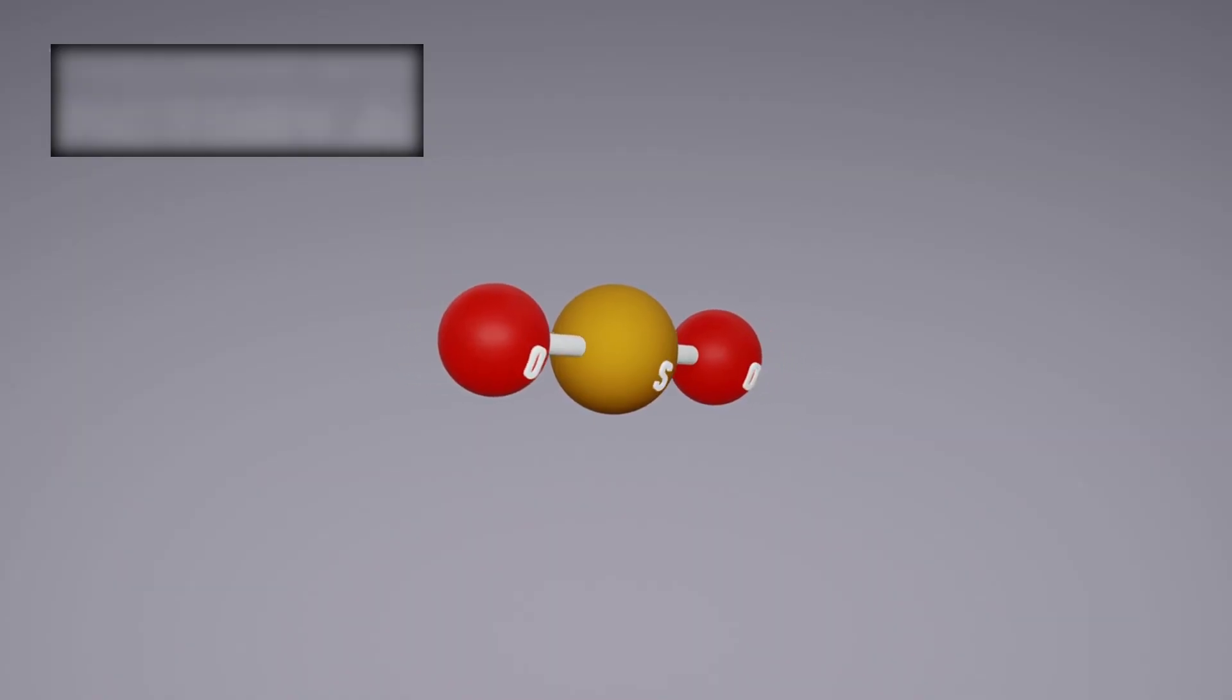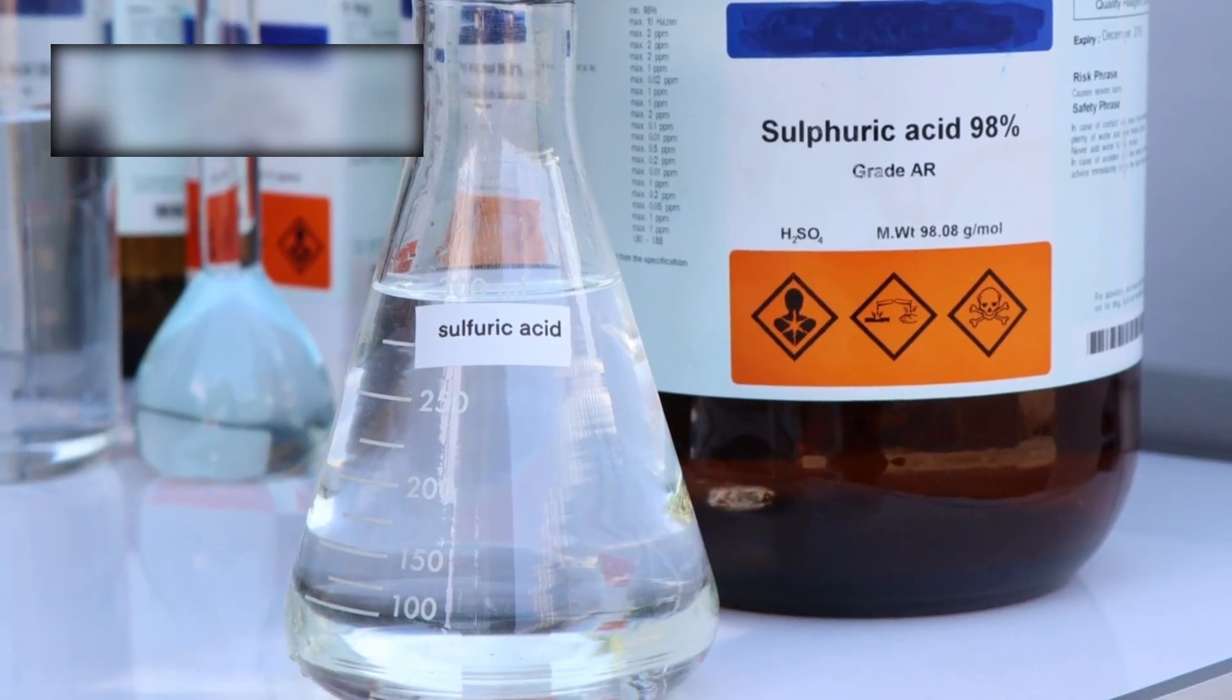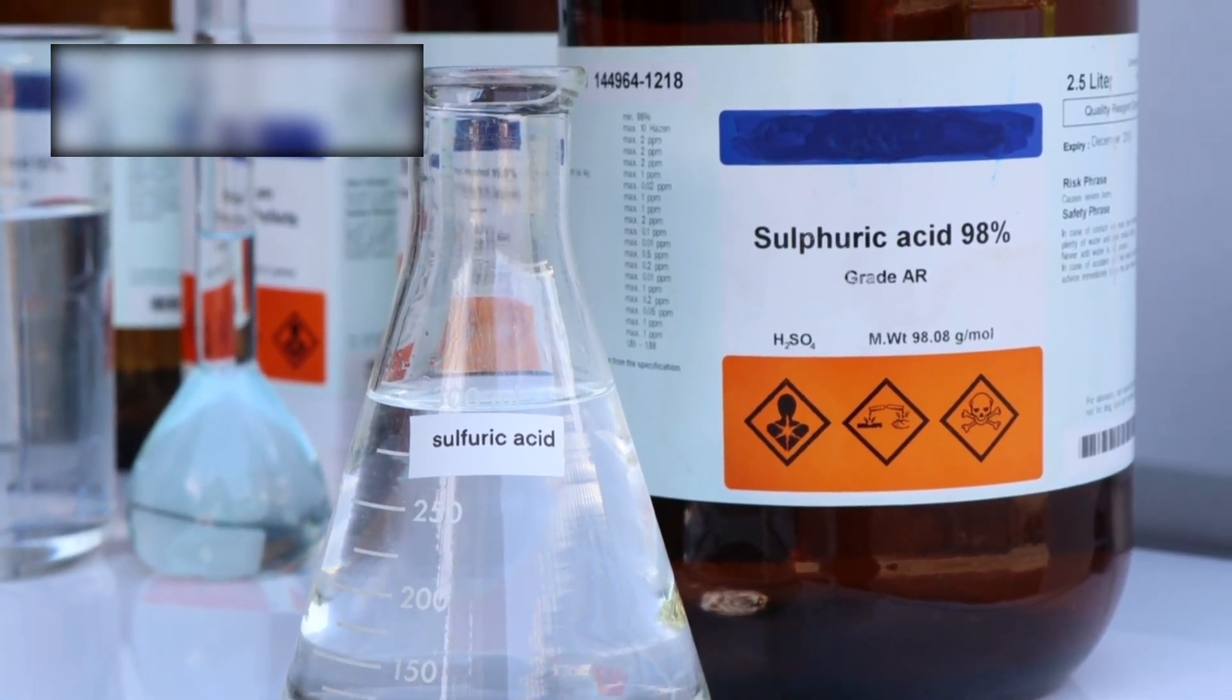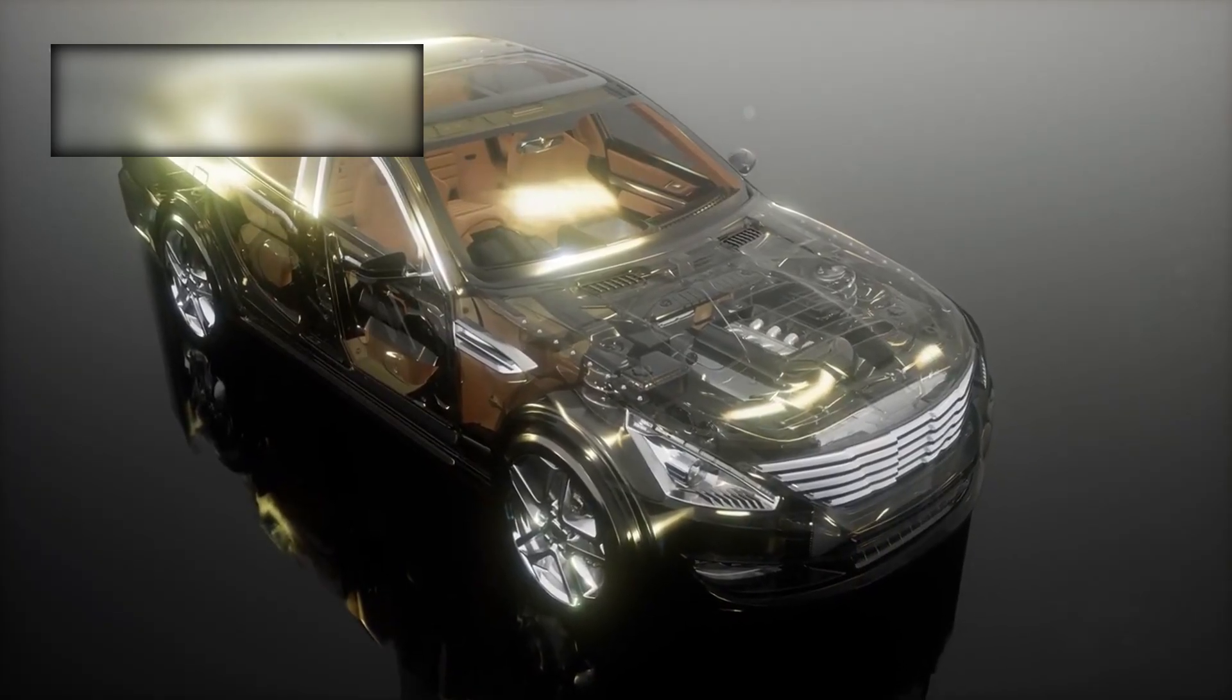Then came the revelation that changed everything. A faint, nearly hidden, yet unmistakable chemical signature: dimethyl sulfide. On Earth, this molecule is produced by only one thing: living organisms. Tiny, unseen phytoplankton drifting in our oceans. Invisible to the naked eye, but vital to the survival of life.